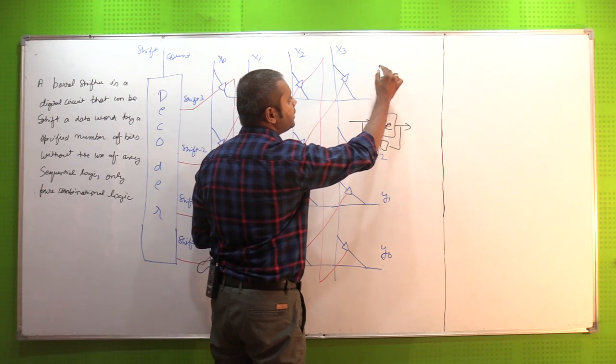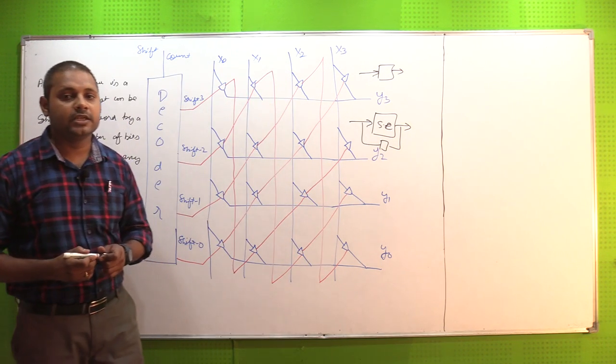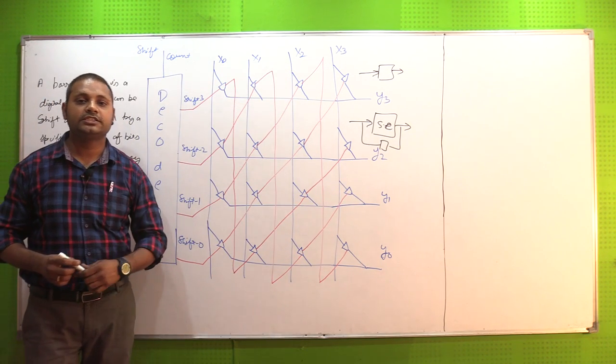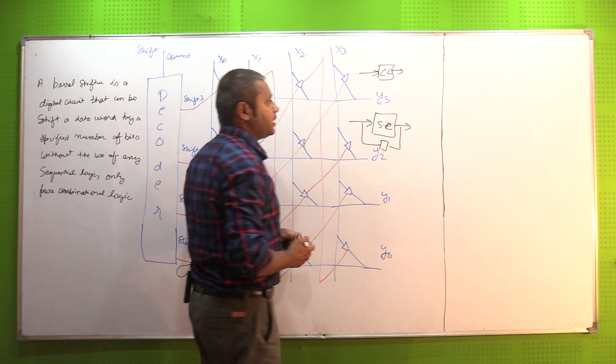If we talk about combinational logic, then combinational circuit depends on present value of input. Whatever present value is, I will get the output. This becomes a combinational circuit.